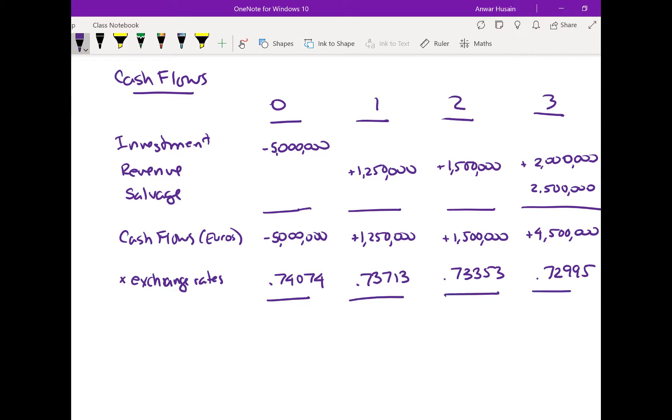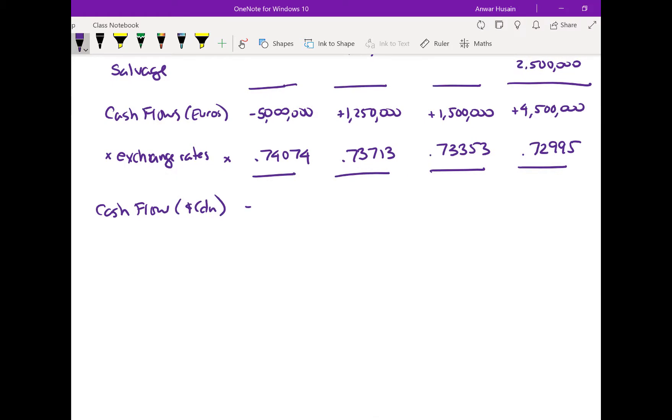So if I multiply each of the euros by those rates, I get the cash flow in Canadian dollars as follows. So in year zero, which is now, we end up with a cash flow of negative 6.5 million Canadian dollars, and that's going to be a negative. The rest are all going to be positive. So in year one, it'll be Canadian dollars of 1,695,772. In year two, it will be 2,044,902. And then in year three, it'll be 6,164,777, and that will also be positive. So now we have Canadian dollar cash flows that we can use to run a net present value calculation.